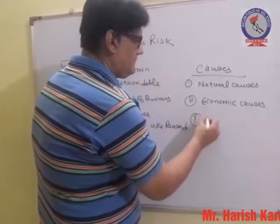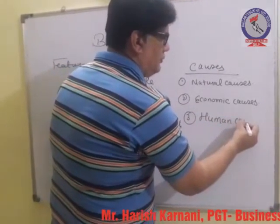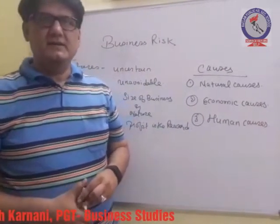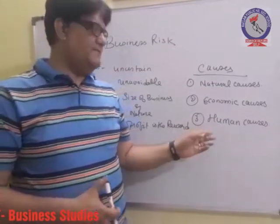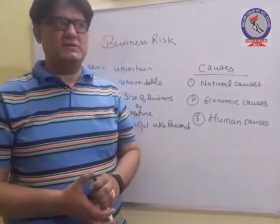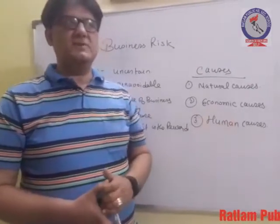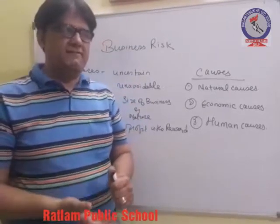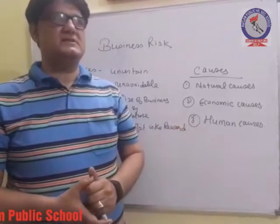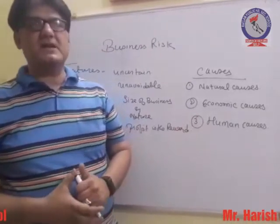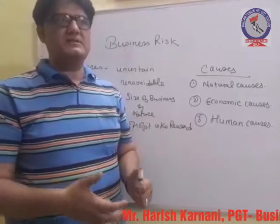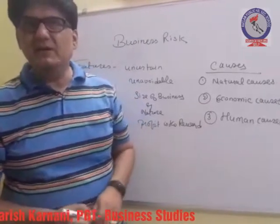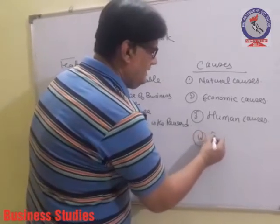Then comes human causes, which are directly related with human beings — the employees of the organization. They may not be skilled or efficient enough to use available technology. They may mishandle the assets or machinery of the business, be dishonest, commit theft, or create nuisance. Sometimes there are riots, strikes, or lockouts due to which production does not take place, and the businessman has to suffer heavy losses.